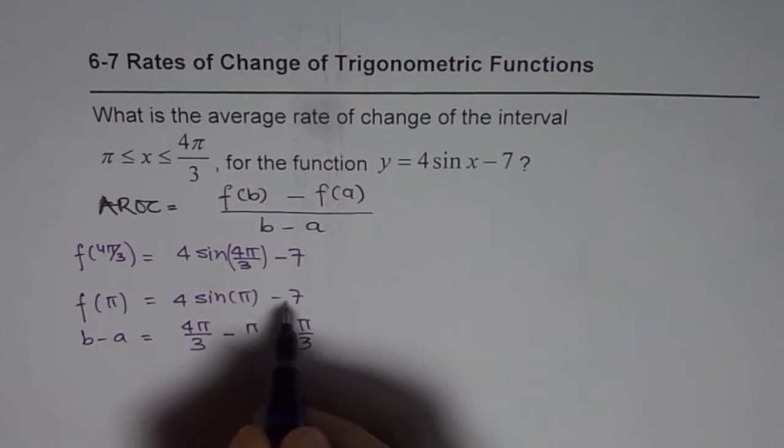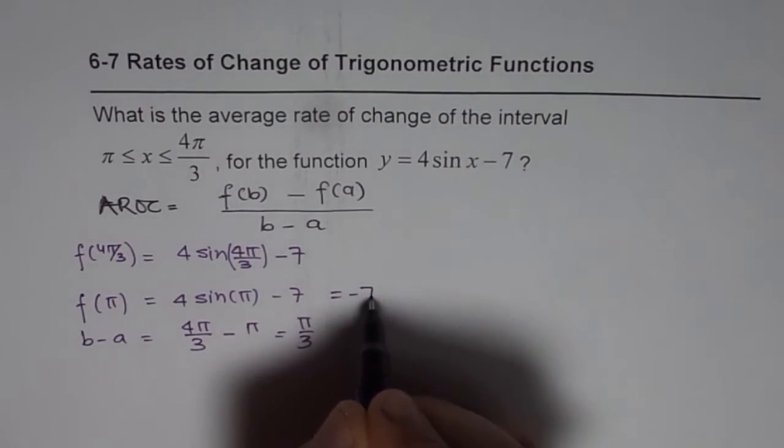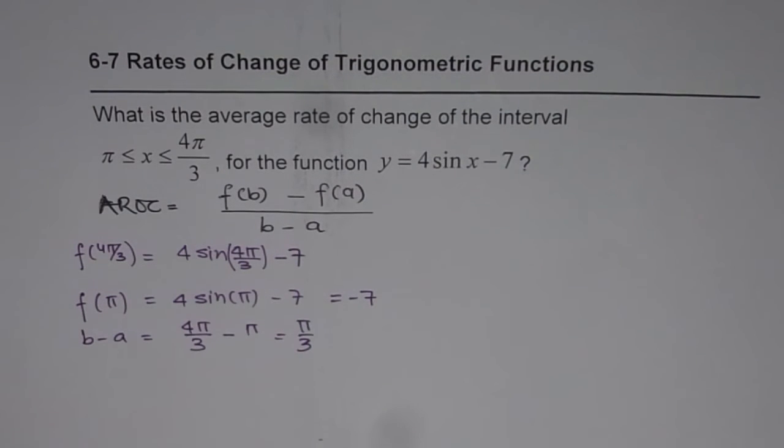We know sin π is 0 so this should be -7 and now let's calculate the value for 4 times sin 4π/3.